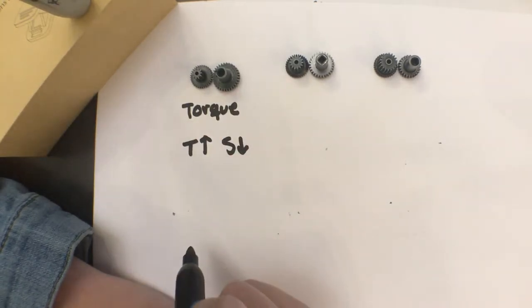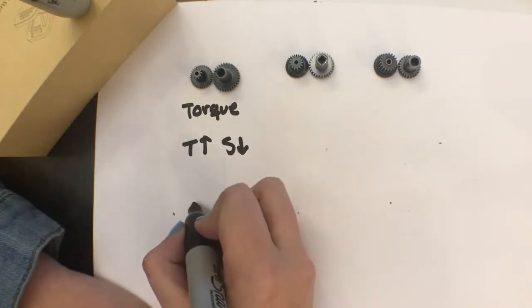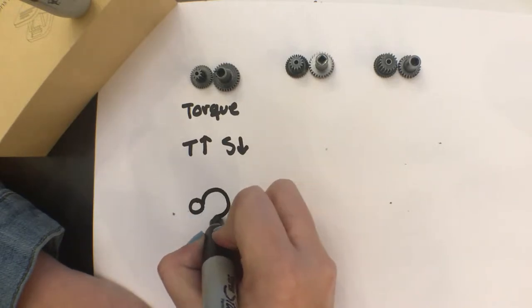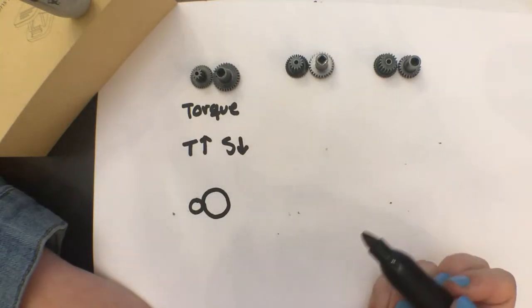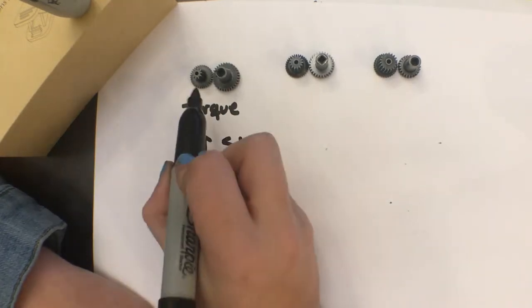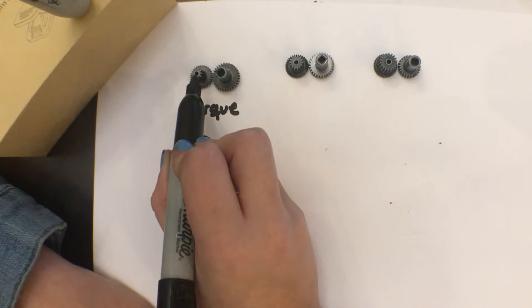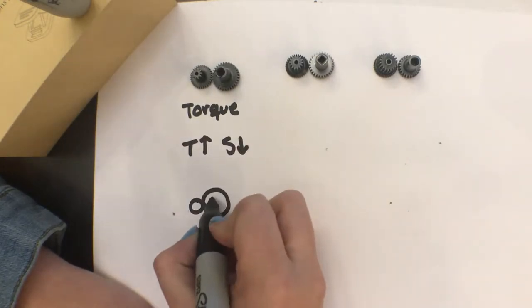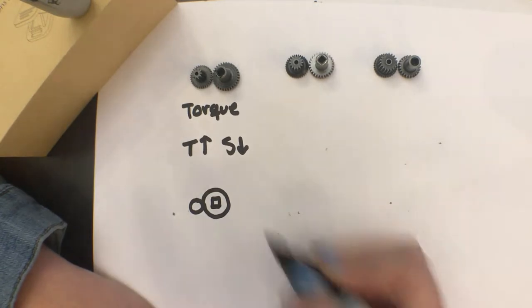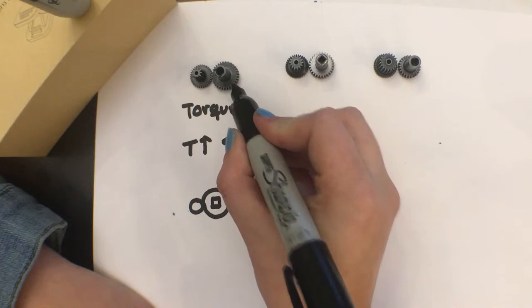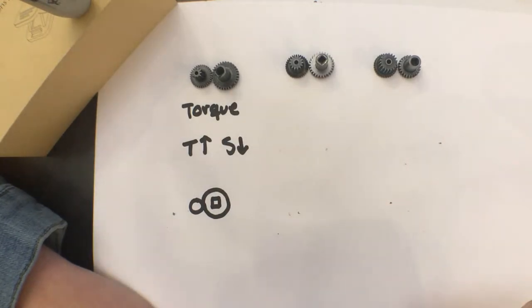You can tell these are torque gears because the input gear is a lot smaller than the output gear. You can tell which one is input and which one is output by looking at the tops of them. The input one has a little circle hole in it and the output one has a square in it which is basically where the axle goes. So this little gear is your input and this larger one is your output, so that's torque.